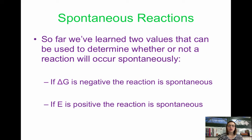So far, we've learned two values that we can use to determine whether or not a reaction will occur spontaneously. These are the two values that definitively tell us if something is spontaneous: delta G and E. Delta G is Gibbs free energy, and if delta G is negative, the reaction is spontaneous. If E, the cell potential, is positive, the reaction is also spontaneous.